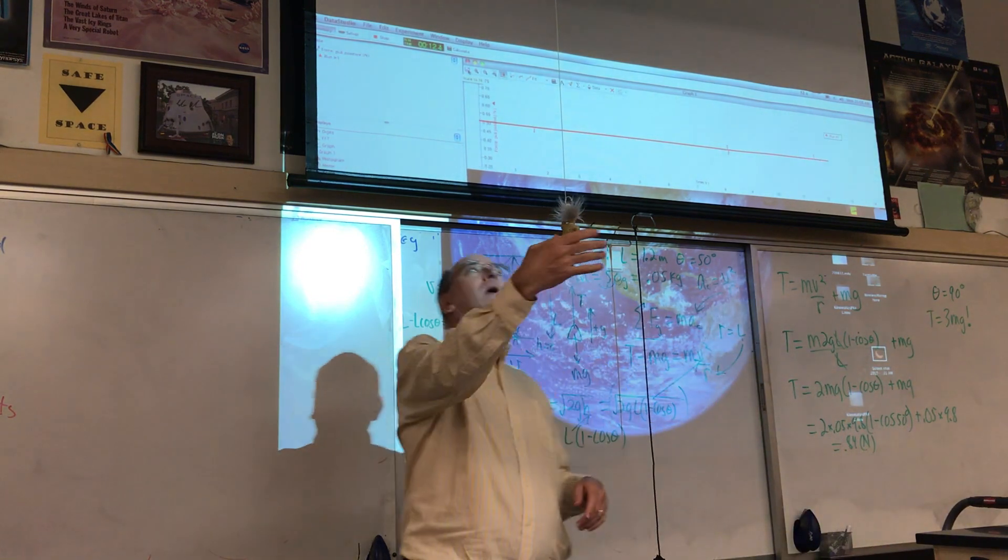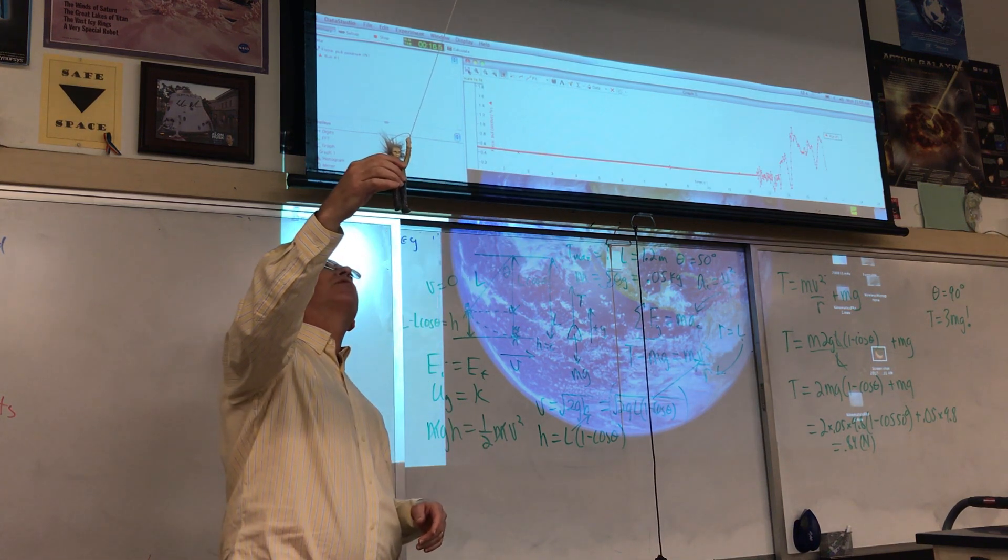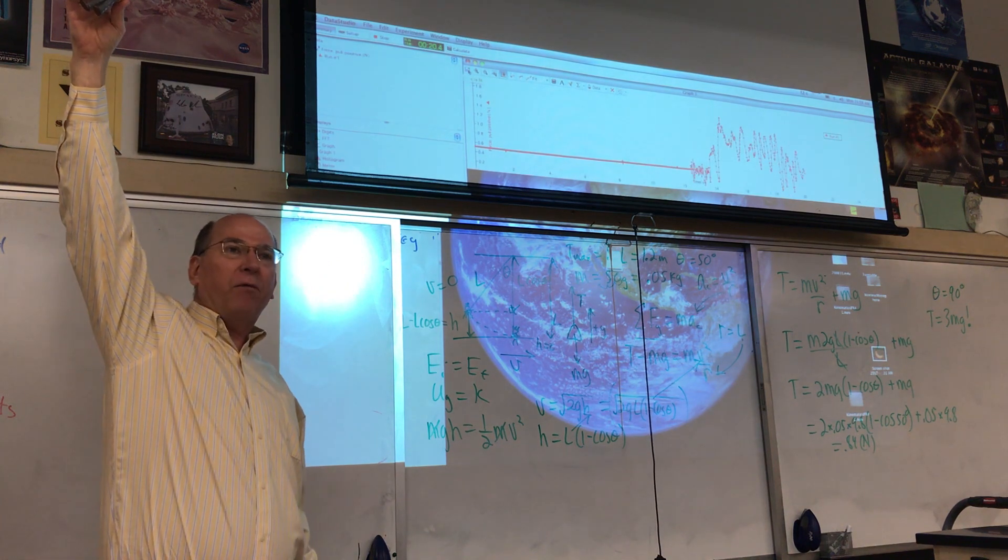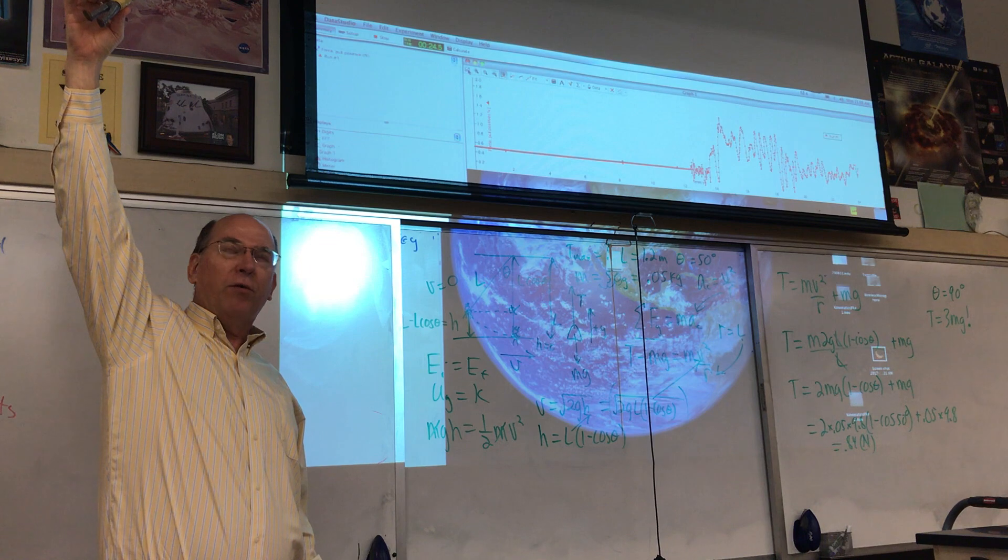Pull it back, and I have a protractor up at the top—20, 30, 40, 50 degrees. I pretty much picked 50 degrees because that's as high as I can reach without going on my tippy-toes. You've got to release him very gently.